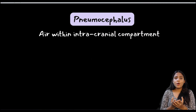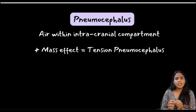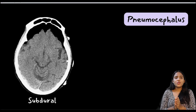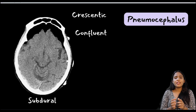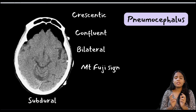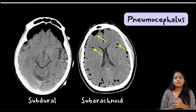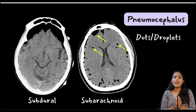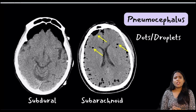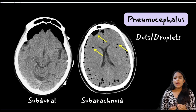Another important entity is the presence of air in the intracranial compartment, or pneumocephalus. When this produces mass effect and neurological deterioration, it is a tension pneumocephalus. The most common location is subdural pneumocephalus, which is crescentic, confluent, usually bilateral, and moves with change in patient position. The frontal lobes appear pointed — the famous Mount Fuji sign — and get compressed downwards, indicating tension pneumocephalus. The second most common location is subarachnoid pneumocephalus, where air is collected as dots and droplets in the cisterns and sulci. This must be differentiated from fat, as a ruptured dermoid cyst can show similar findings.